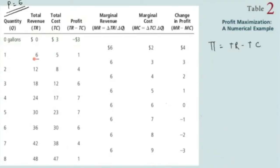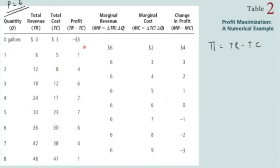At first unit production you get six units of revenue and total cost is five — subtract them and you get one dollar of profit. At the second quantity, total revenue is twelve and total cost is eight — subtract them and you get your profit. You calculate profit similarly at each unit of production. The goal of the firm is to maximize profit, so let's look at the profit column carefully and find where profit is maximized.